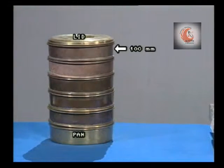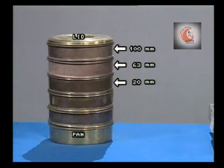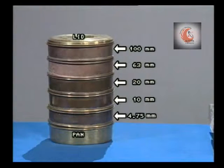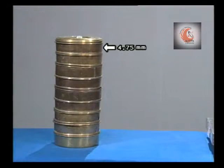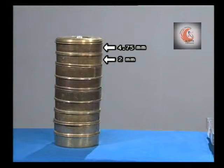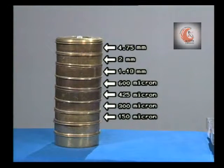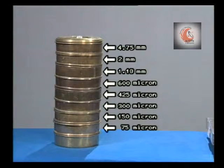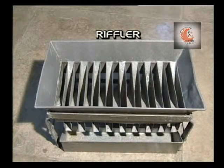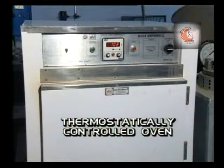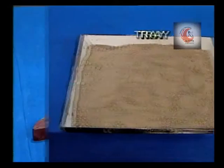The apparatus required for conduct of this practical includes a set of IS sieves of 100 mm, 63 mm, 20 mm, 10 mm, 4.75 mm, 2 mm, 1.18 mm, 600 micron, 425 micron, 300 micron, 150 micron and 75 micron size with lid at the top and pan at the base. Also required: a riffler, thermostatically controlled oven, trays and brush.